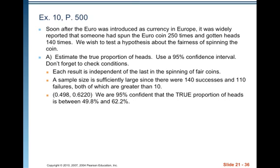Each result is independent of the last in the spinning of fair coins, so we have evidence of independence. This is inherently independent if it's a fair coin. The sample size is sufficiently large since there are 140 successes and 110 failures, both of which are greater than 10. For a confidence interval, we use what actually happened — there's no null value P-naught to consider. Using our calculator, we generate the confidence interval and get 0.498 to 0.622.